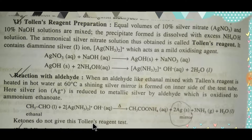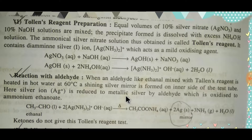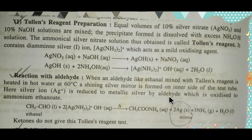Ketones never give a positive Tollens' reagent test, so by this way we can differentiate between an aldehyde and a ketone. Ethanal will be converted to ammonium acetate (ammonium ethanoate). When an aldehyde like ethanal is mixed with Tollens' reagent and heated in hot water at 60 degrees Celsius, a shining silver mirror is formed on the inner side of the test tube. Here, silver ion is reduced to metallic silver by the aldehyde — the aldehyde acts as the reducing agent and diamine silver hydroxide acts as the oxidizing agent.